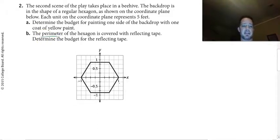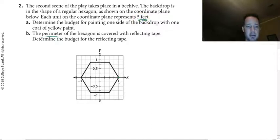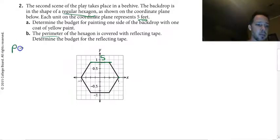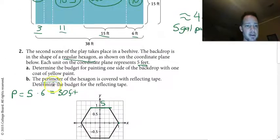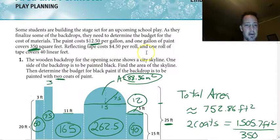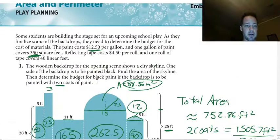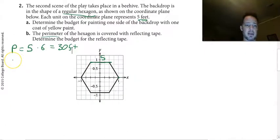For the perimeter: four tick marks equals one unit, which is five feet. Each side of the hexagon is one unit — so five feet. Since it's a regular hexagon, all six sides are five feet each, giving a perimeter of 30 feet. The tape costs $450 per roll and one roll covers 40 linear feet, which is more than enough, so they only need one roll costing $450.